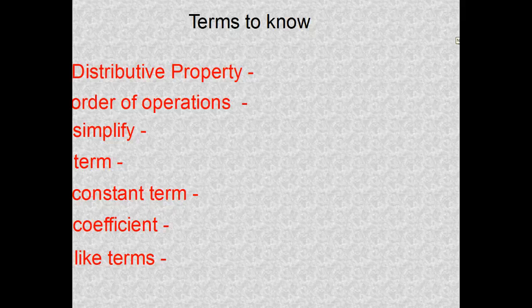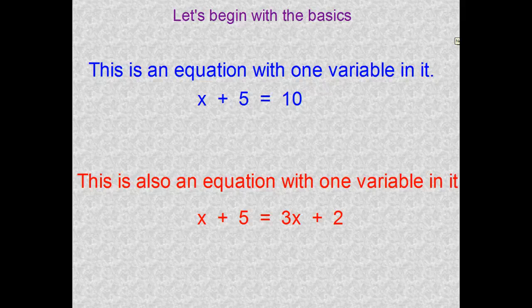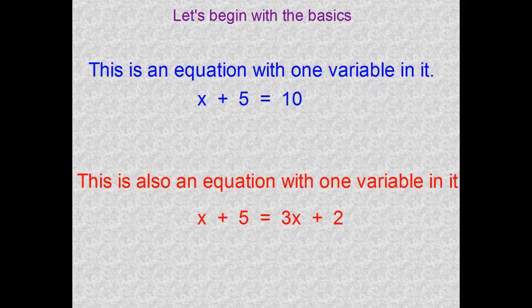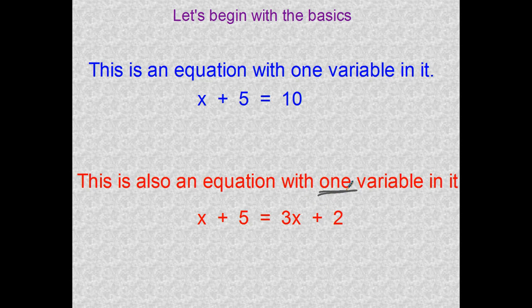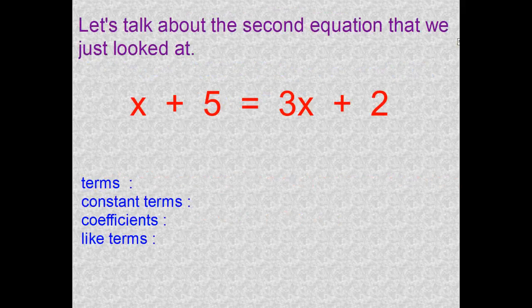This is a very vocab-heavy part — pause the video and jot down all these words in your journal and define them. Now let's begin with the basics. We have two equations: one in blue and one in red. The blue equation is X plus 5 equals 10, which you solved in 7th grade. The red equation has the same variable X but on both sides of the equal sign — which is why it's still called an equation with one variable.